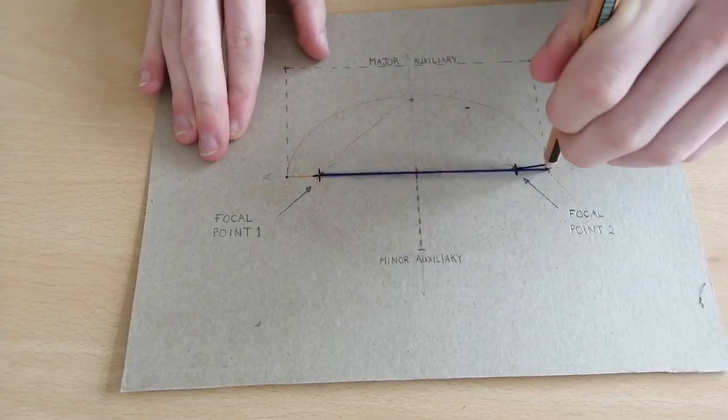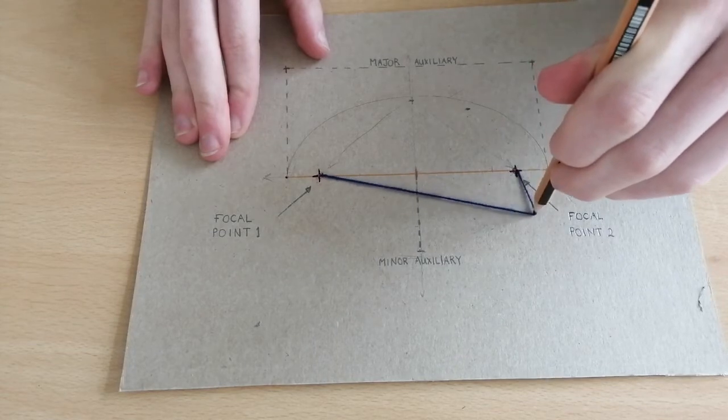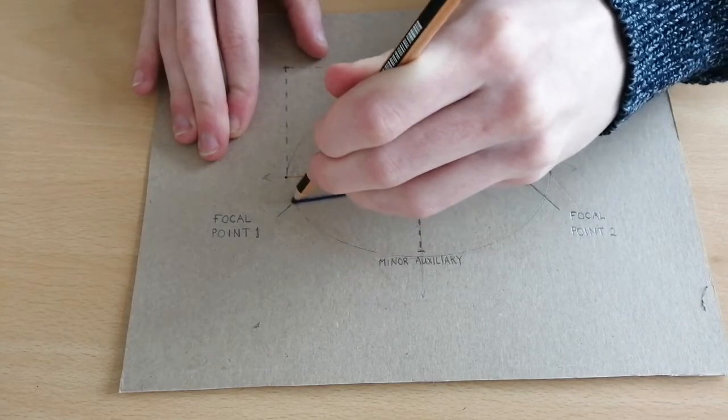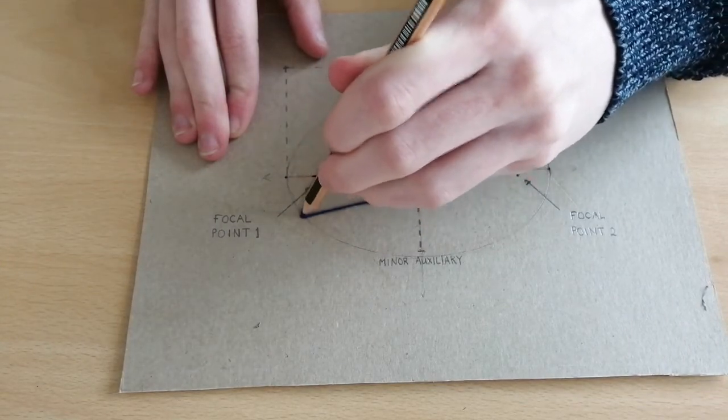Now as you can see, this is giving us a very ovular shape, which is very much a flattened circle, which is where the word ellipse comes from, it means to fall short.